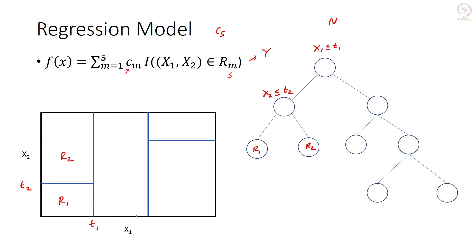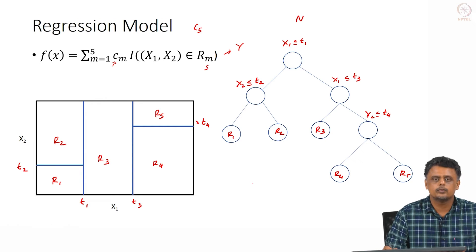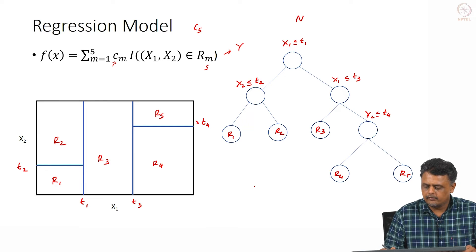On the right-hand side, where X1 > T1, we split that region again into two by considering X1 ≤ T3, giving us R3 for the left sub-region. On the right of T3, we split once more by considering X2 ≤ T4, yielding R4 and R5. That is the order in which we have divided the input feature space into regions.